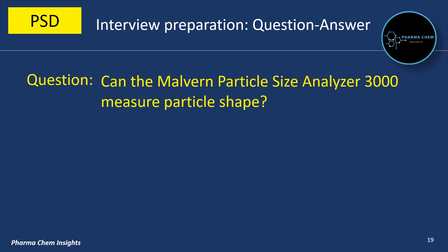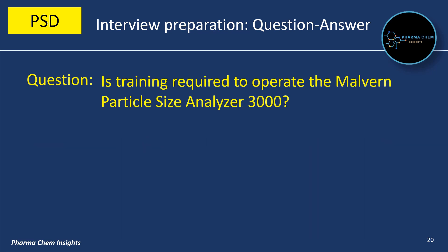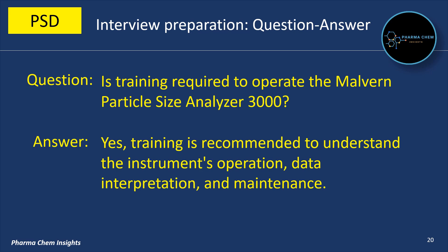Can the Malvern Particle Size Analyzer 3000 measure particle shape? The primary function is to measure particle size; however, additional accessories or techniques may be required to analyze particle shape. Is training required to operate it? Yes, training is recommended to understand the instrument's operation, data interpretation, and maintenance.